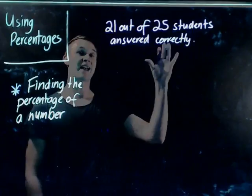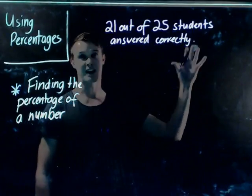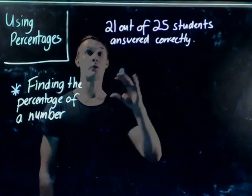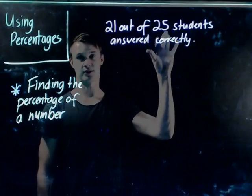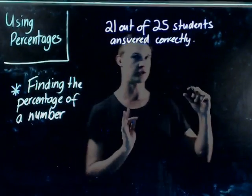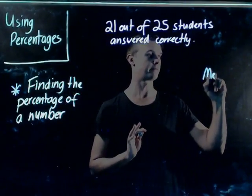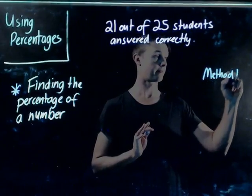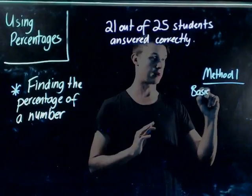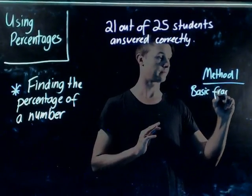So I'm just going to give you this question here. It says 21 out of 25 students answered this question in this test correctly. Now how would we find the percentage of students that actually answered this correctly? We're going to use two methods here. I'll get you to write them down. So method one, in this way, it's just using a basic fraction.